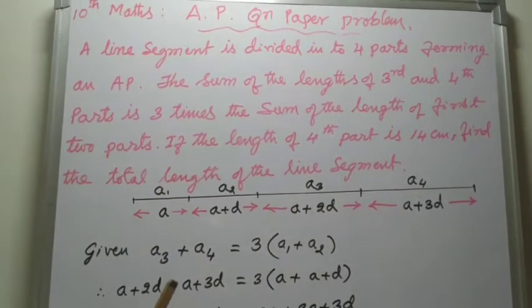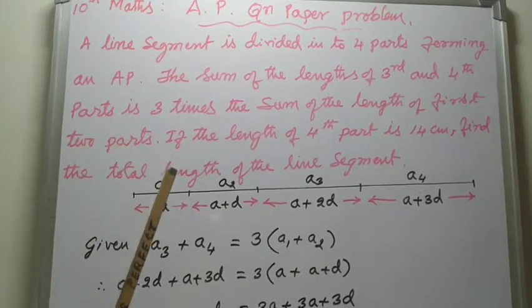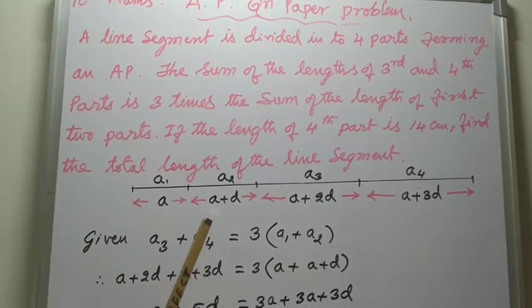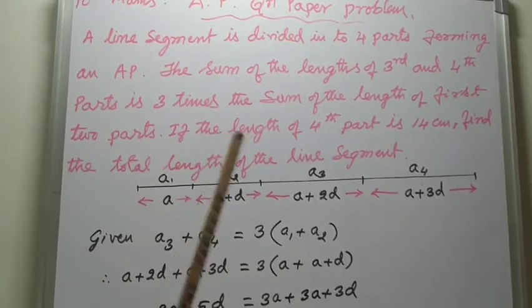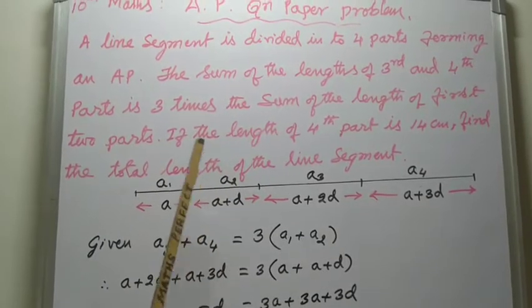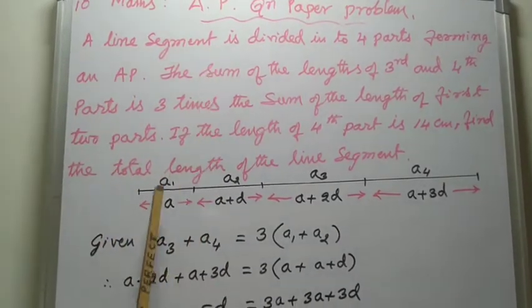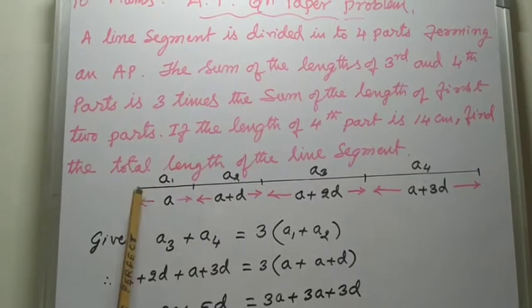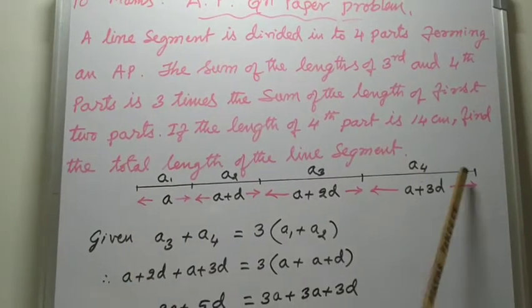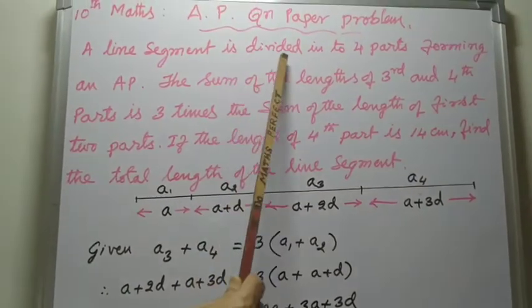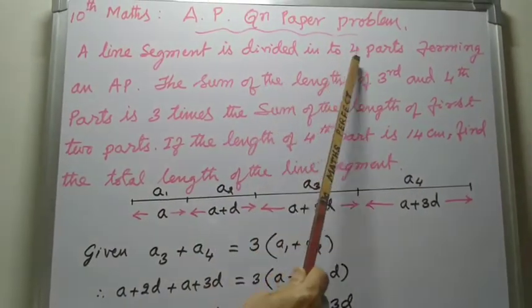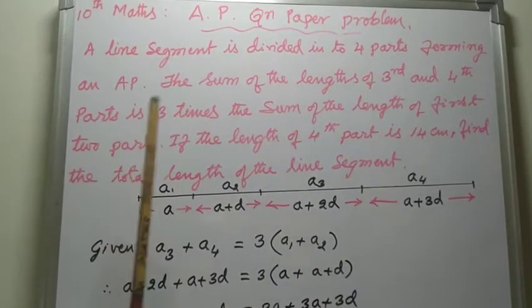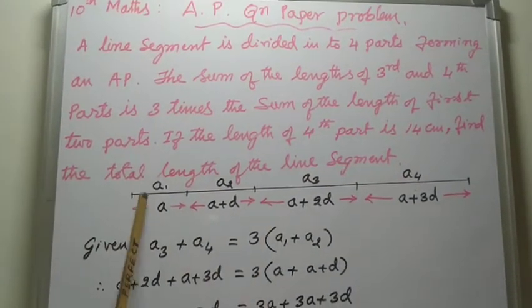Dear students, to understand this problem, please read the problem a second time slowly, then you can understand the given points. A line segment, for example from this point to this point — this is the line segment. It is divided into four parts forming an AP. AP means there should be a common difference.